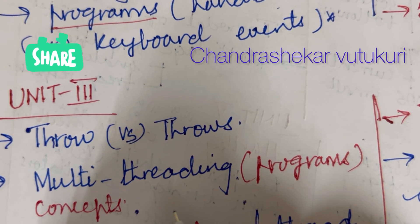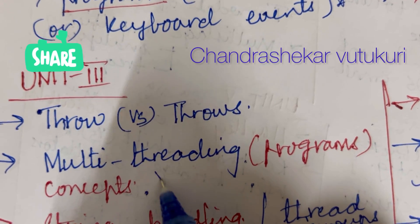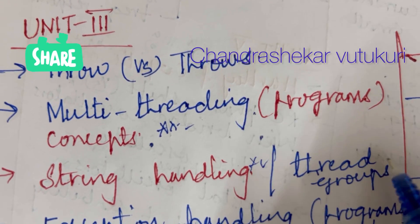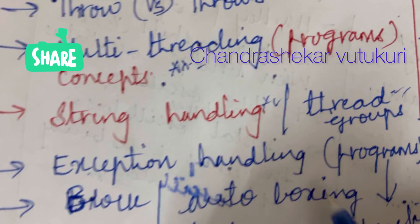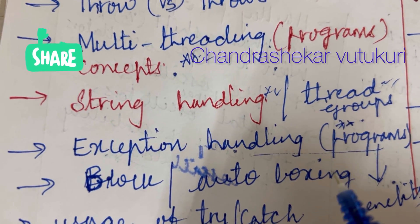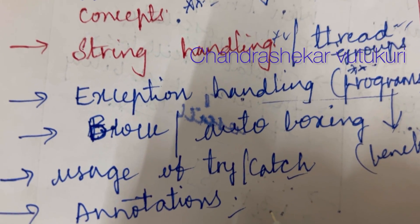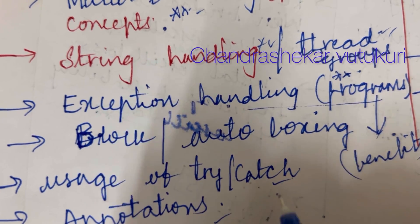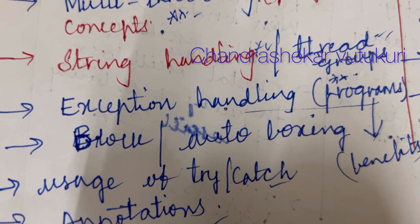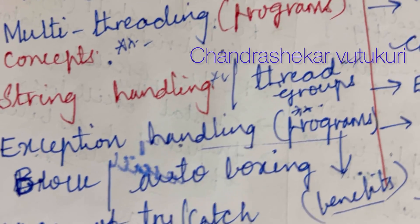Coming to unit 3, question numbers are 6 and 7. Throw versus throws, multi-threading programs and concepts are set as the topmost and definite questions this time. String handling is also a topmost question, along with thread, defined thread, and thread groups. Exception handling programs are set as topmost questions and may occur for a 5-mark block. Auto-boxing, usage of try and catch, and annotations may be short questions. Do not forget to work out all the parameters because you will be getting even one-mark questions this time.